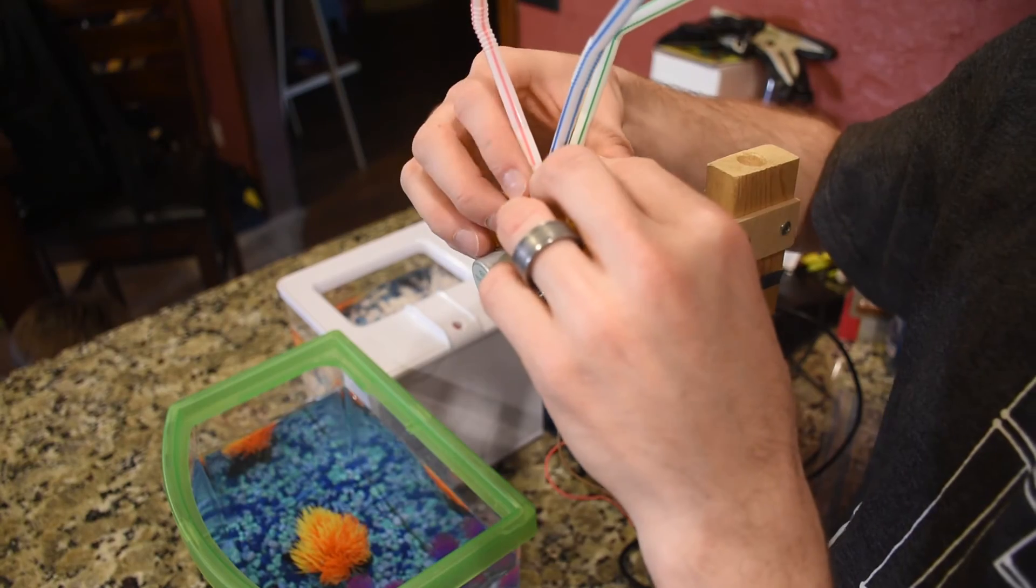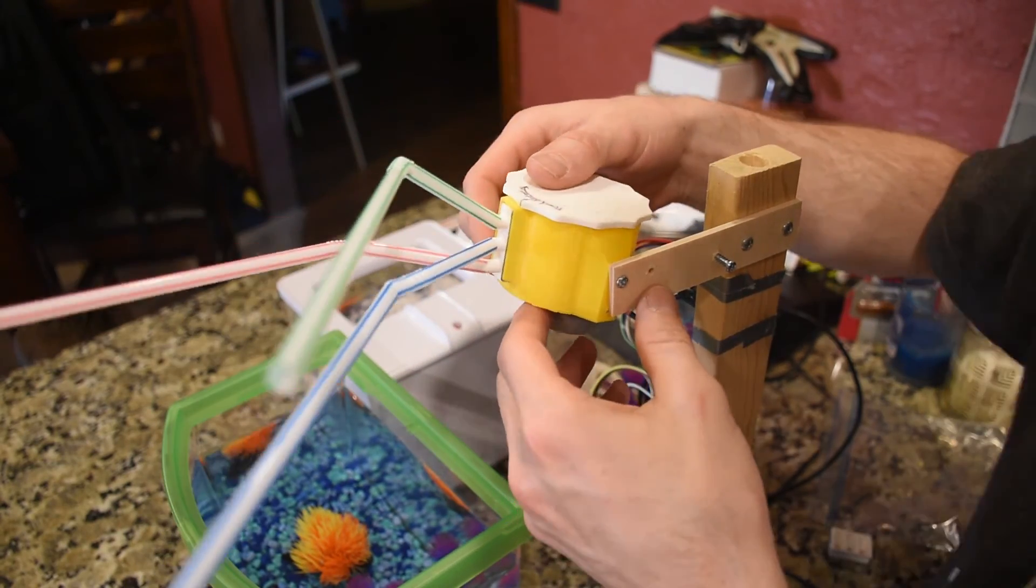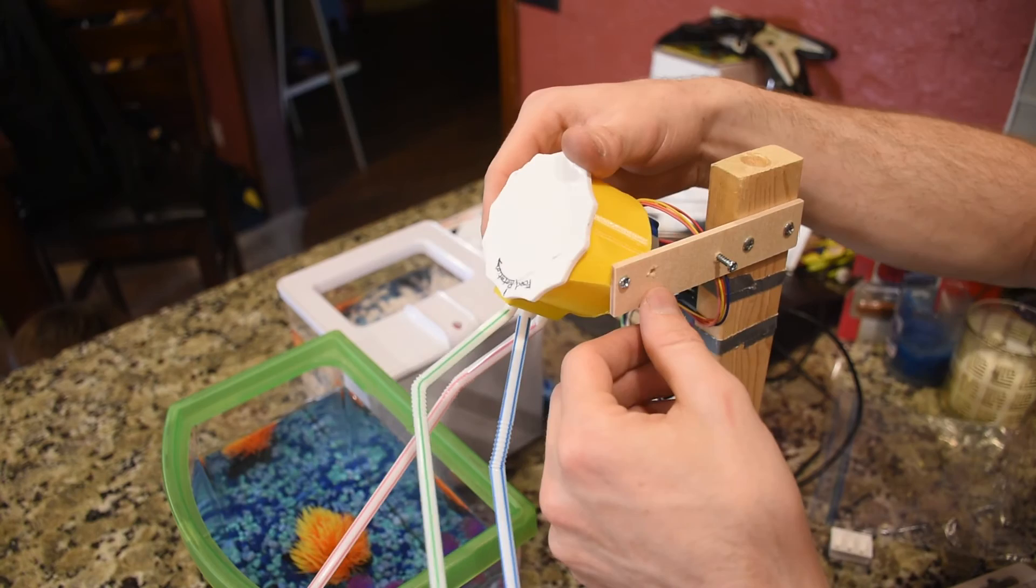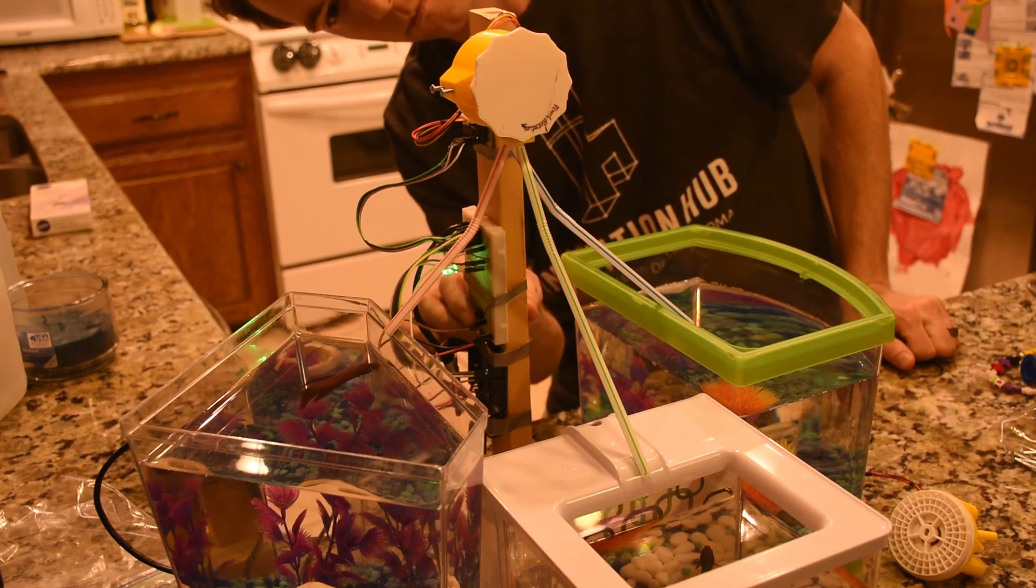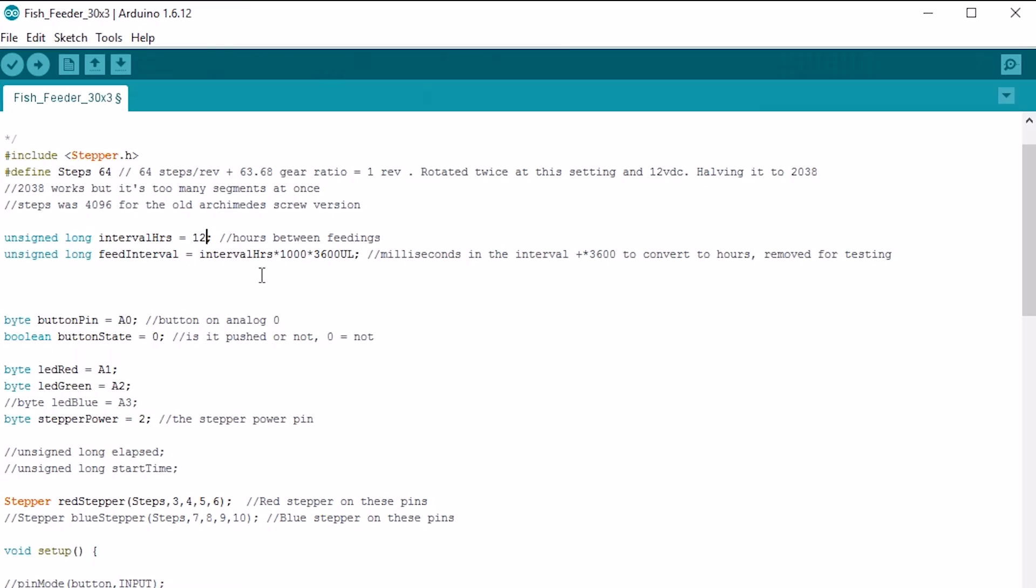Then I exchange the funnel for the feed tubes and attach bendy straws like on the pizza-style feeder. Once the start button is pushed, the three betas will be nicely fed for about two weeks.